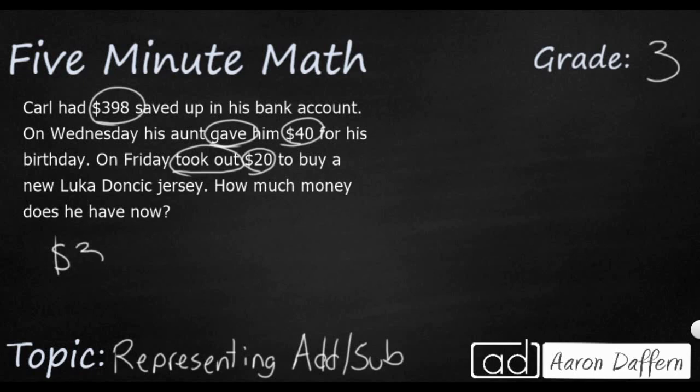We're going to start with $398. That's how much he starts with. When it says his aunt gives him $40, that means we're going to add that $40 right there. And then when he's going to take out the $20 to buy a new jersey, taking out, that's just another way of saying he's going to subtract that money. So then we can say we have a little box. That's going to be our unknown. That's the actual new amount of money that he has right now.